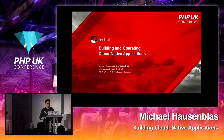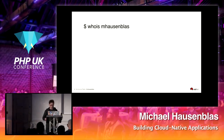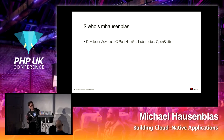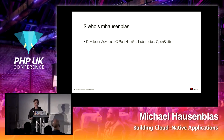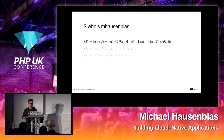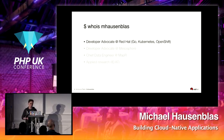Welcome to my talk on building and operating cloud-native applications. A little bit about myself — I'm currently a developer advocate at Red Hat focusing on Kubernetes and OpenShift, mainly working upstream in Kubernetes. Before that I was an advocate at Mesosphere, also in the container space. Before that I was chief data engineer at MapR, a startup in the Hadoop space when Hadoop was cool. And before that I did applied research in Austria and in Ireland.